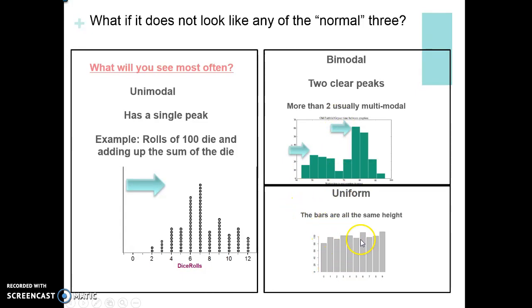This graph down here is uniform. This would be where all of the bars are the same height. Maybe just think about rolling a single die a hundred times. If you roll it a hundred times you should get the same amount of ones, twos, threes, fours, fives, and sixes. This graph is symmetric because if you fold it in half you would get the same on both sides.